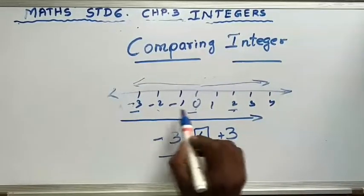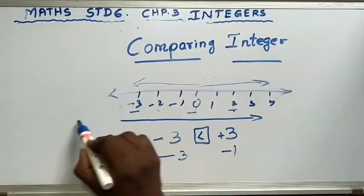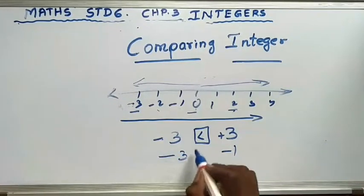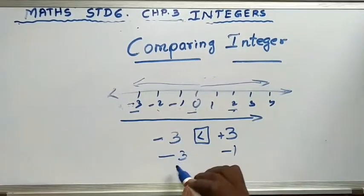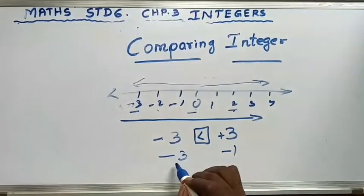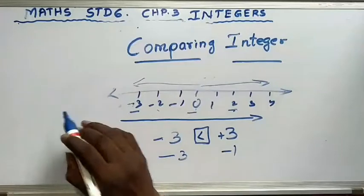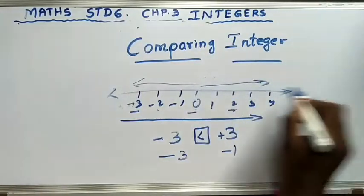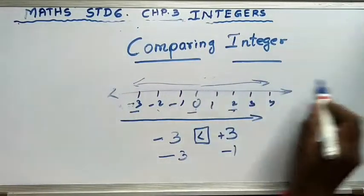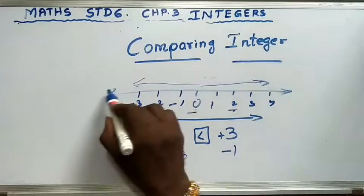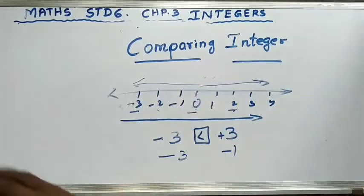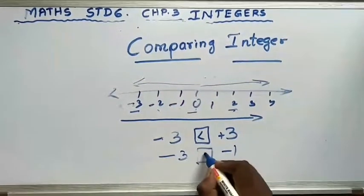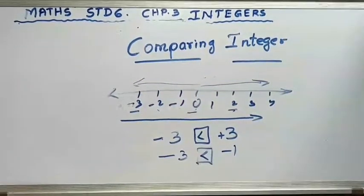If you go from right to left on the number line, the numbers become smaller. So 0, then minus 1, then minus 2, then minus 3. As you go left the number increases in size but decreases in value. So minus 1 is bigger than minus 2, and minus 2 is bigger than minus 3. The right side is greater; the left side is smaller.